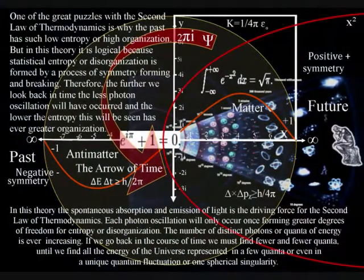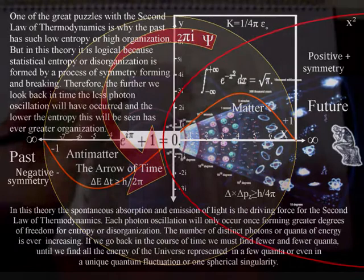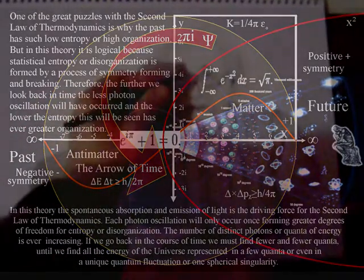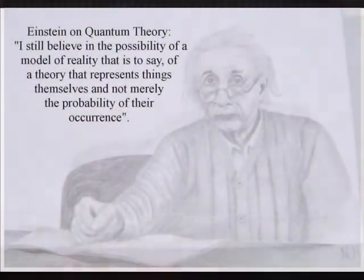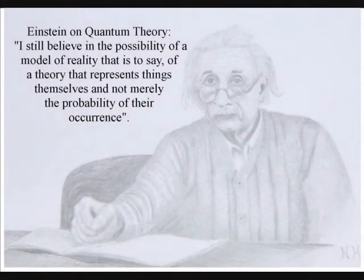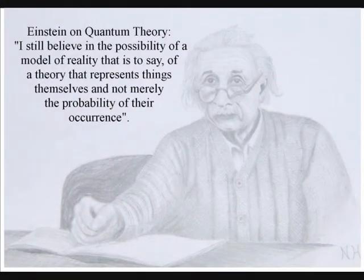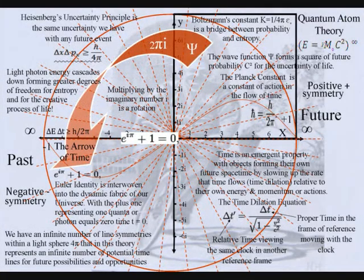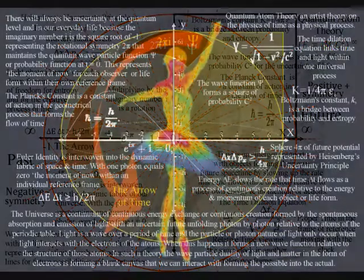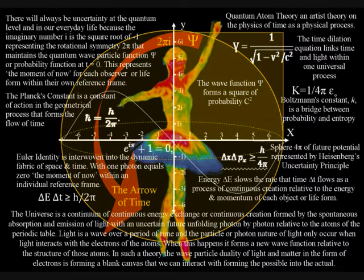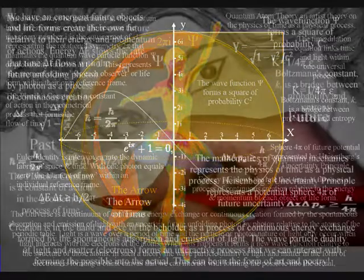Life is an integral part of this creative process, with the wave-particle duality of light and matter in the form of electrons forming a blank canvas that we can interact with, forming the possible into the actual. This process gives us free will to choose if a potential photon remains a wave of probability or becomes a photon oscillation changing the future in the process. In this theory, creation is truly in the eye and hand of the beholder.